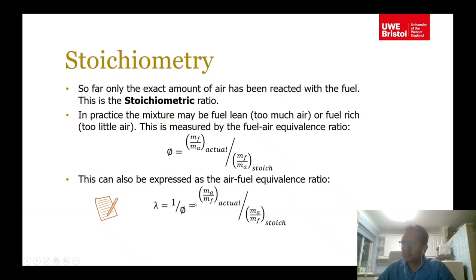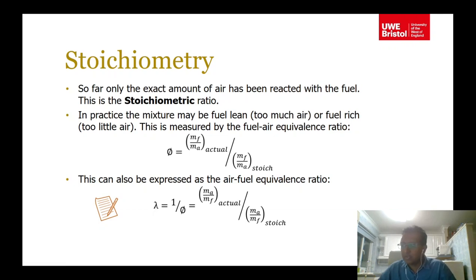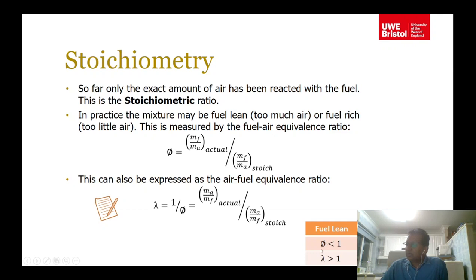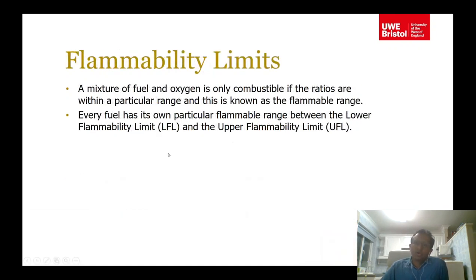Lambda is sometimes called the air-fuel equivalence ratio but it is actually the excess air ratio. If lambda is greater than 1, you have a lean mixture; if lambda is less than 1, you have a rich mixture; and lambda equal to 1 is stoichiometric. You also need to consider flammability limits — the mixture is only combustible if the ratios fall within a specific range.